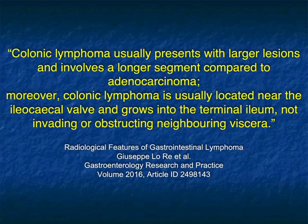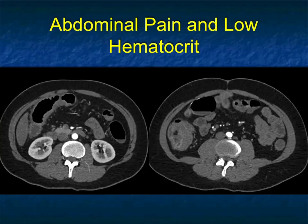Colonic lymphoma usually presents with larger lesions and involves a longer segment of bowel compared to adenocarcinoma. More commonly, colon lymphoma is near the ileocecal valve, can grow into the terminal ileum, and does not obstruct as typically as adenocarcinoma will.